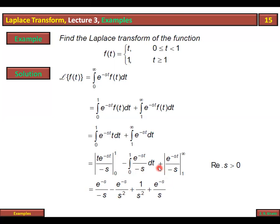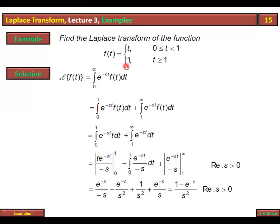After applying both upper and lower limits, e^(-infinity) = 0 ho jata hai aur lower limit se answer bachta hai. Final answer: (1 minus e^(-s)) over s². Yeh jo question diya tha uski Laplace transformation hai: (1 minus e^(-s)) over s².